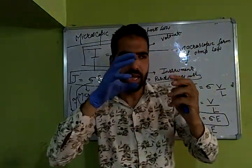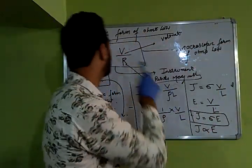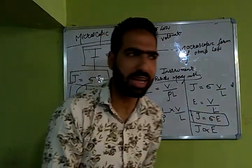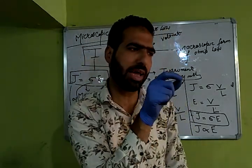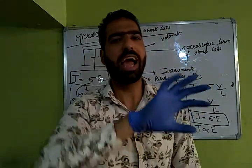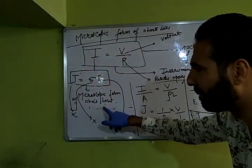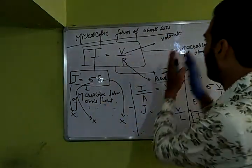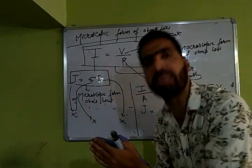To summarize: when you studied electricity for the whole conductor, you used the macroscopic form of Ohm's law. And when you want to study electricity at a particular point, then you apply the microscopic form. So when to apply which form depends on the level of study.